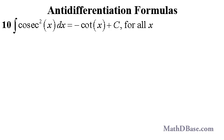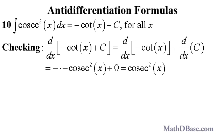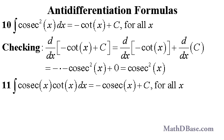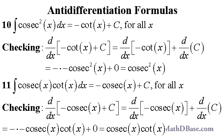The antiderivative of cosecant squared of x is negative cotangent of x plus c; checking, the derivative of negative cotangent of x plus c equals negative of negative cosecant squared of x, or just cosecant squared of x. The antiderivative of cosecant of x times cotangent of x is negative cosecant of x plus c; checking, the derivative of negative cosecant of x plus c equals cosecant of x times cotangent of x. In future videos in this series, we will discuss other antidifferentiation formulas.